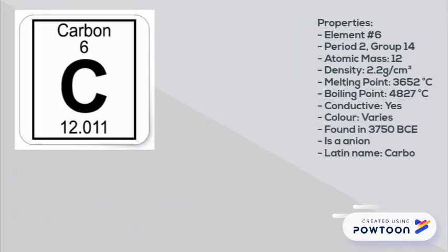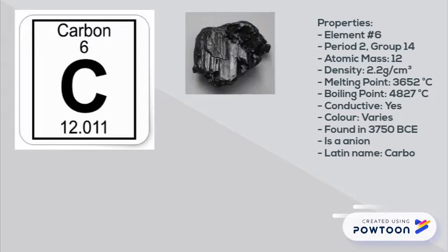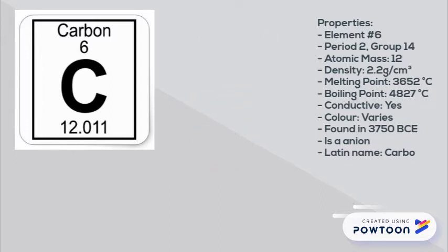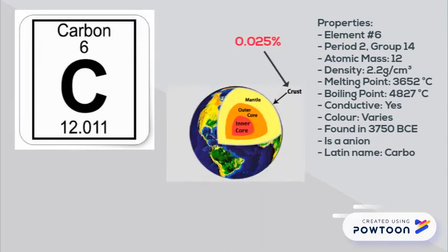Carbon is an element that can come in forms of graphite or even diamonds. Fun fact: although carbon is found everywhere in nature, it's not as plentiful as it seems. Carbon only makes up 0.025% of the earth's crust, yet it is used to form more compounds than any other known element.